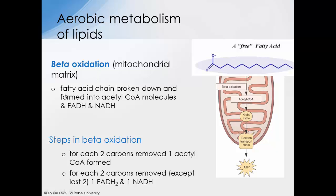Beta oxidation is essentially the breakdown of the fatty acid chain, producing acetyl-CoA molecules and also FADH and NADH. There is some overlap with glucose metabolism because the breakdown of glucose also results in the production of acetyl-CoA, FADH, and NADH — and whether derived from glucose or fatty acids, they are exactly the same molecules. Looking more closely at the steps: for every two carbons removed from the fatty acid chain, you get one acetyl-CoA molecule produced, and one FADH and one NADH produced (except for the last two carbons).